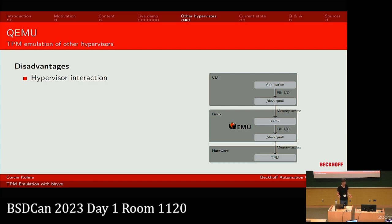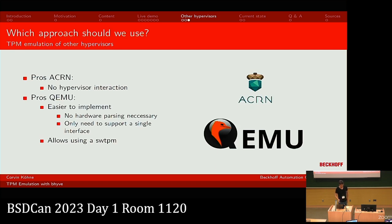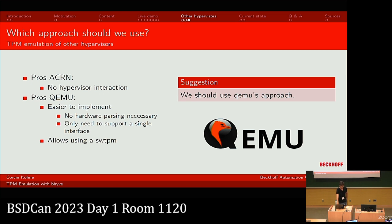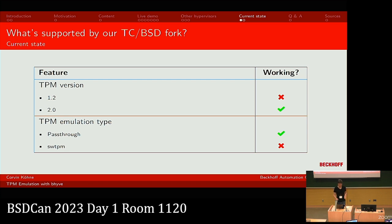The disadvantage of QEMU's approach is that you have hypervisor interactions. To summarize: the advantage of Xen is no hypervisor interaction, but that's not a big deal in practice. QEMU's approach is easier to implement due to the abstraction from the host kernel driver, and it's easy to add a virtual TPM device. My suggestion is to use QEMU's approach, and that's what I've already implemented in our bhyve fork.